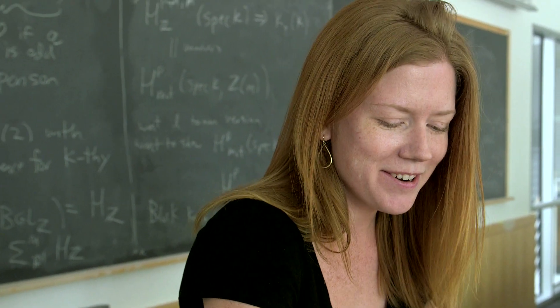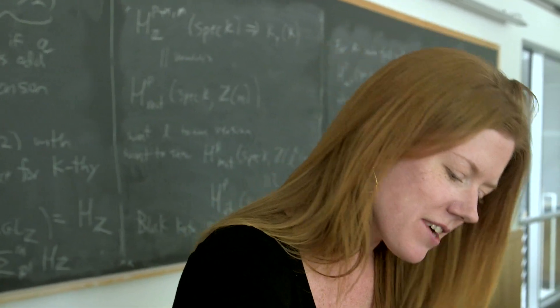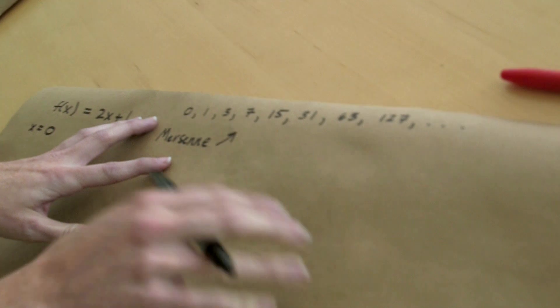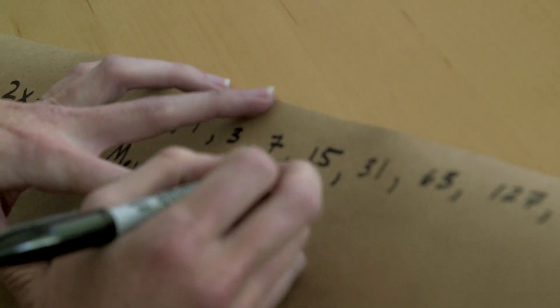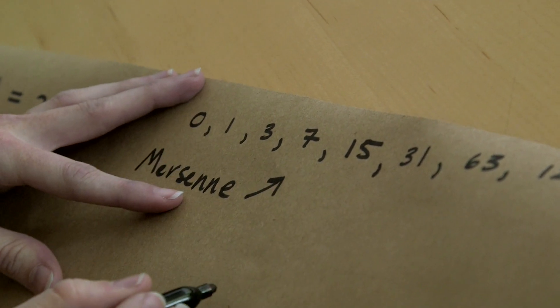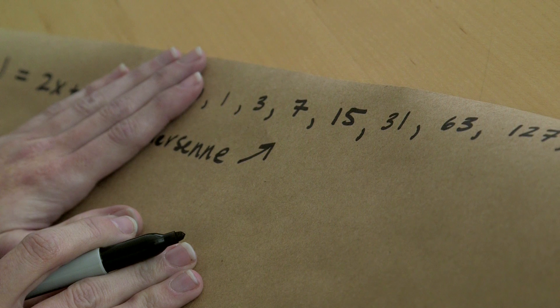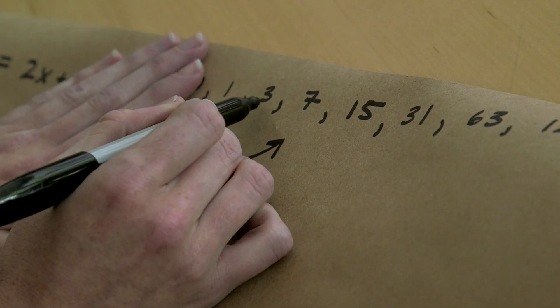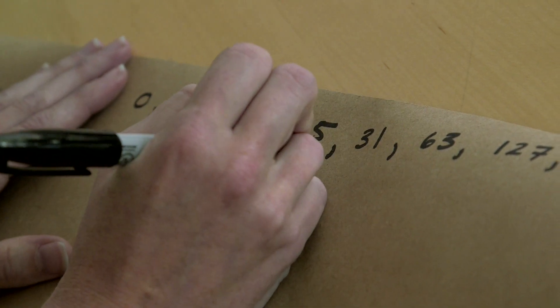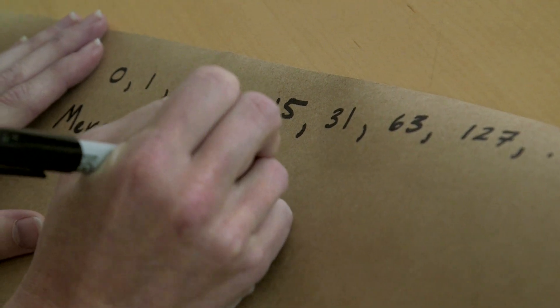That seems like a harder question. Well, it might be a harder question depending on how specific you want to get. But what I mean by the prime divisors of elements of the sequence is we have these factors. So each number factors into prime numbers as long as we're ignoring 0 here. So 3 is already prime. 7 is already prime.